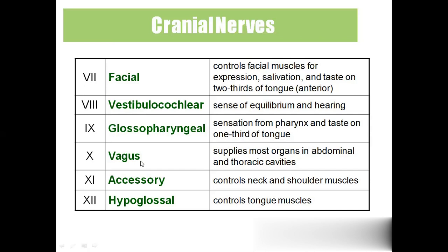Cranial nerve X: vagus nerve — supplies the abdominal and thoracic cavities, including the cardiovascular, gastrointestinal, and respiratory systems. Cranial nerve XI: accessory nerve — controls neck and shoulder muscles. Cranial nerve XII: hypoglossal — controls tongue muscles. Hypo means below, glossal means tongue. These twelve cranial nerves are very important — you must know, for example, that the seventh cranial nerve is facial and the fifth is trigeminal. Cranial nerves are a very important topic under the nervous system.